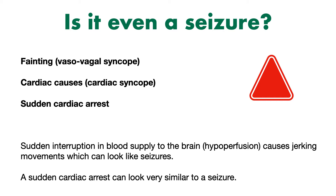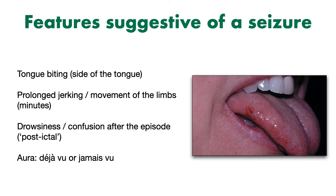So how can we work out whether our patient is having a seizure, or whether something else is going on? Here are some features that are more suggestive of a seizure occurring. Firstly, if the patient has bitten their tongue — specifically if they've bitten the side of their tongue — then this suggests a generalised seizure. On examination, the patient may have a tongue laceration or bruising, and there may be blood in the mouth. Patients that bite the tip of their tongue are less likely to have had a seizure, as these injuries can occur when patients fall and land on their chin and face.